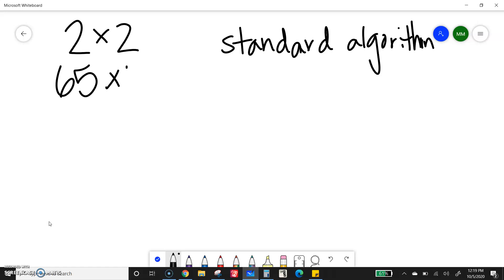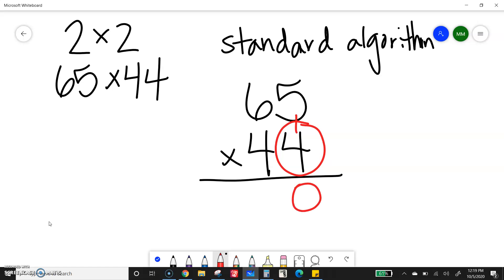I have 65 times 44. I'm going to write it on top of each other, and first I'm going to start with the ones place. I'm going to do 4 times 5, which is 20. Just like with one digit, I write the ones and carry the tens. Now I'm going to do 4 times 6. That's 24 plus 2. I get 26.